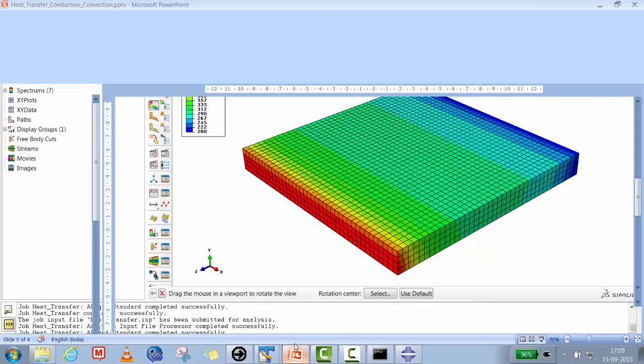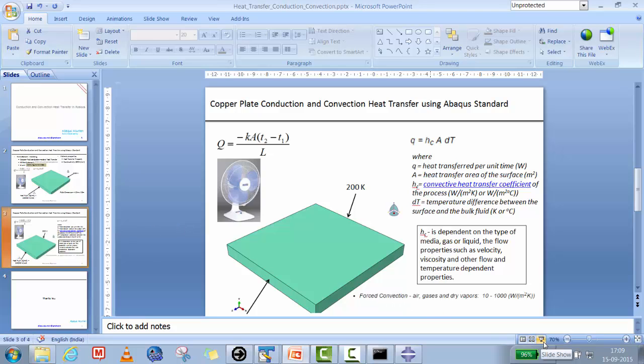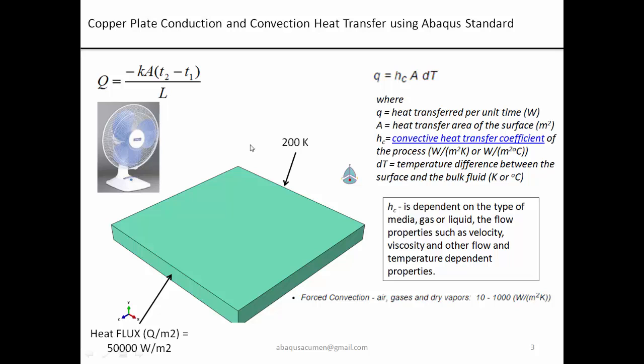To summarize: we modeled two modes of heat transfer — conduction and convection. For conduction we assigned thermal conductivity and validated Fourier's law. For convection using h·A·ΔT, we demonstrated the physical significance of h and how changing it affects the results, connecting the Abaqus software workflow to real engineering problems.